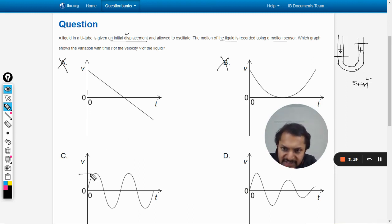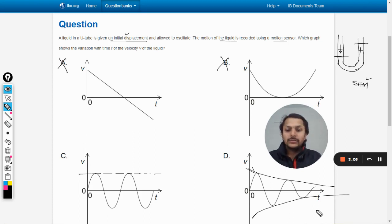In graph C, you can see the amplitude is constant—it doesn't change. But in D, the amplitude is constantly reducing. The amplitude constantly reduces like this. Okay, now, if the losses are not considered...